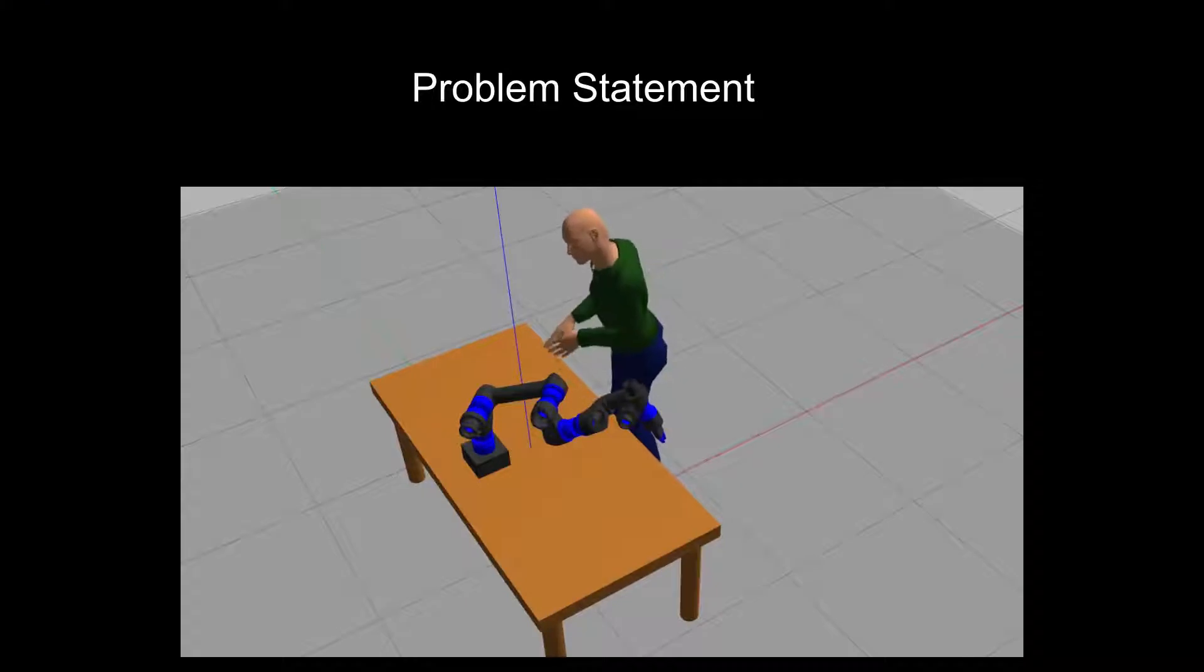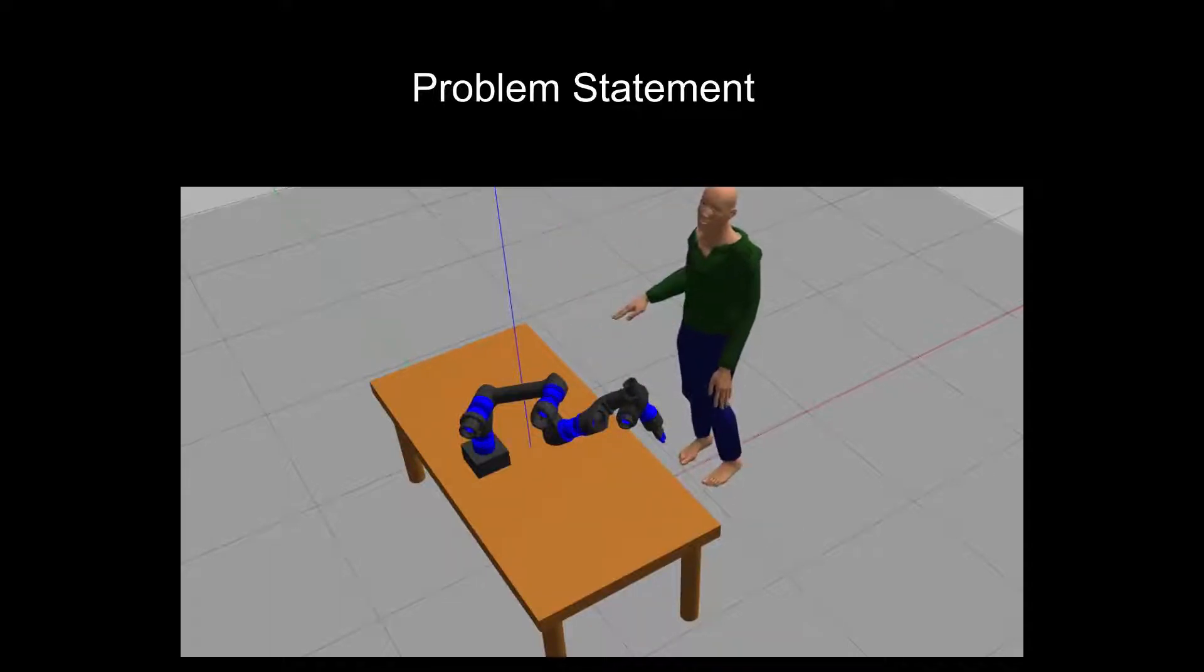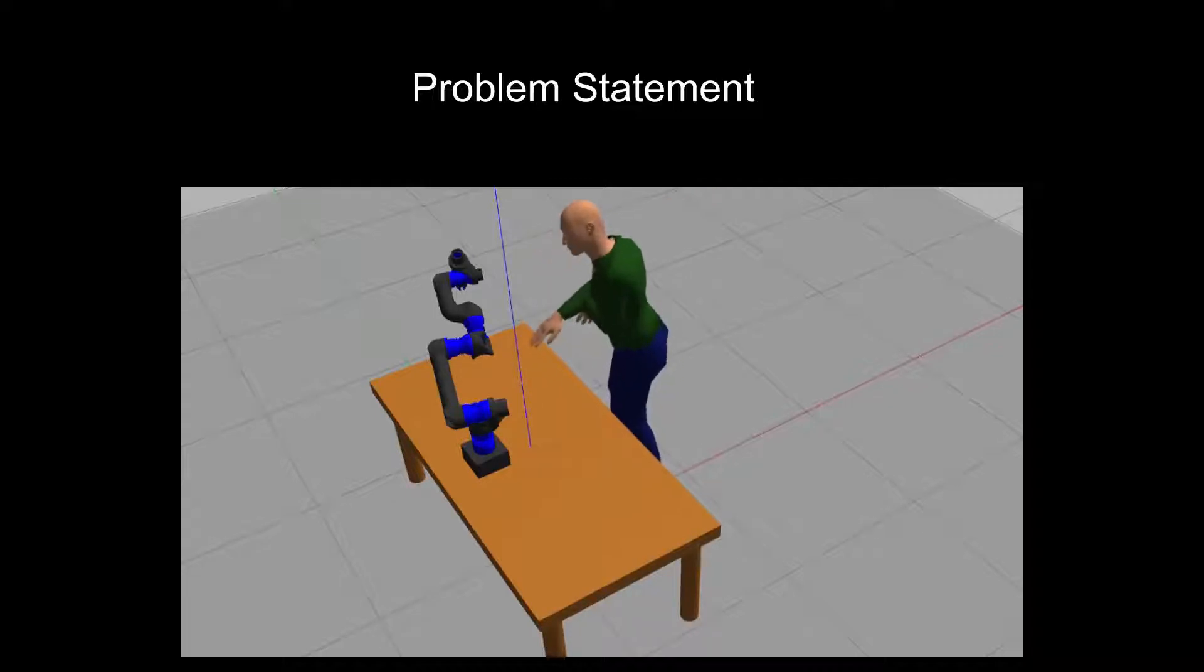In our reinforcement learning setting, a six-degree-of-freedom manipulator has to share its workspace with the human worker. The human repeatedly walks up to the working table on which the robot is mounted to perform a task. Simultaneously, the agent has to learn to move from an initial position to a random goal-joined position while evading the human worker.